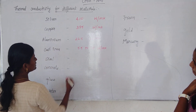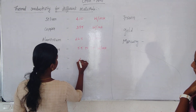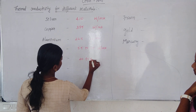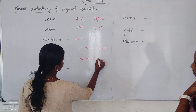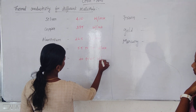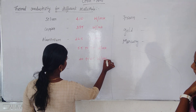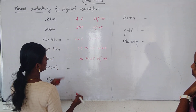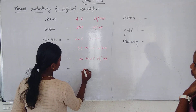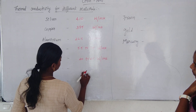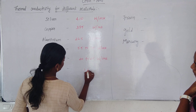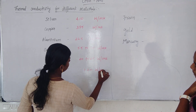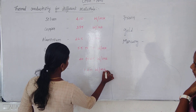The next material is steel. Steel's thermal conductivity range is 22 to 45 watt per meter Kelvin. Next is concrete. Concrete's thermal conductivity range is 1.20 watt per meter Kelvin.